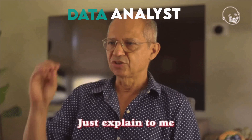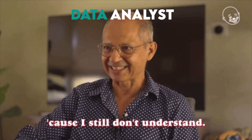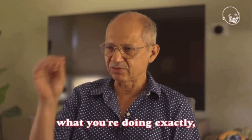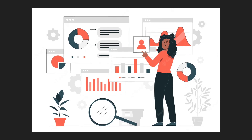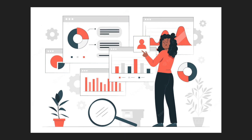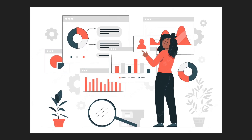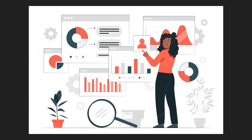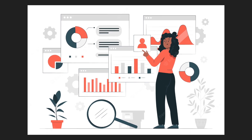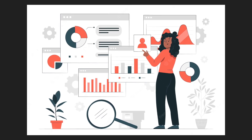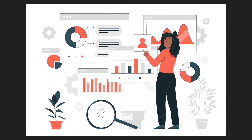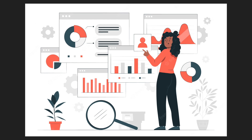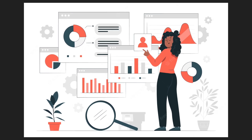Number one: data analysts. Here's one type of job all industries have. A data analyst's primary goal is to analyze the data for the product and business teams. They answer product and business questions by churning through data related to product engagement and marketing, which then translates to making product and marketing business decisions.